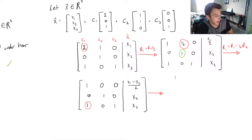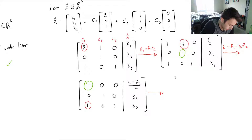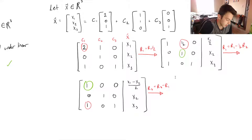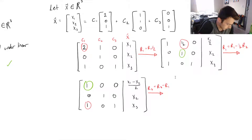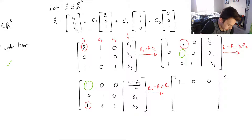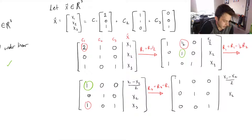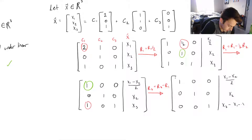We just need to eliminate the 1 beneath the first pivot in row three. Taking row three minus row one won't change the pivots in row three since the relevant entries are zero. This gives us row three as (0, 0, 1 | x3 - (x1 - x2)/2). So our reduced row echelon form is: row one: (1,0,0 | (x1-x2)/2), row two: (0,1,0 | x2), row three: (0,0,1 | x3 - (x1-x2)/2).